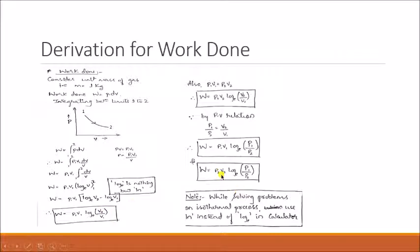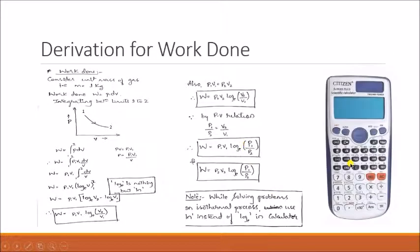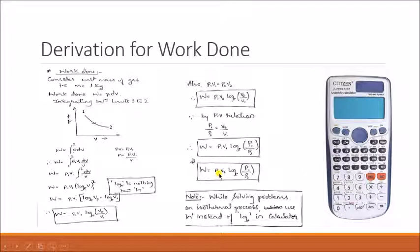Based on the given data in a problem you can use any of these formulas. For example, if initial pressure and final pressure are given, use the pressure form of the equation. One important note: while substituting into the calculator, you must use LN (natural log), not LOG (common log). If you use the common log your answer will be completely wrong. So always use LN when calculating work done during the isothermal process.